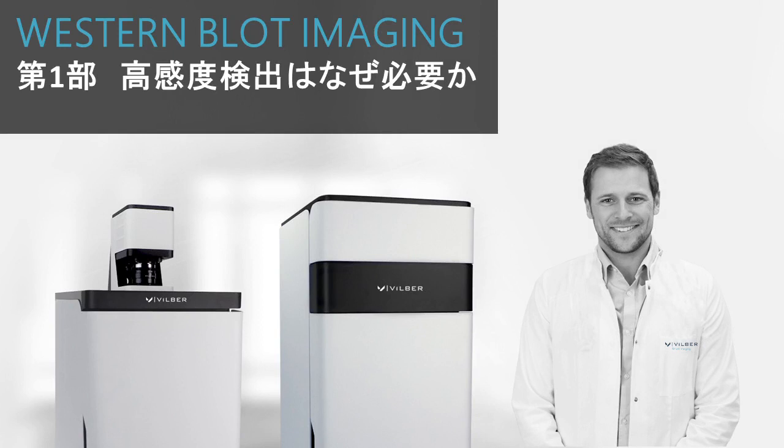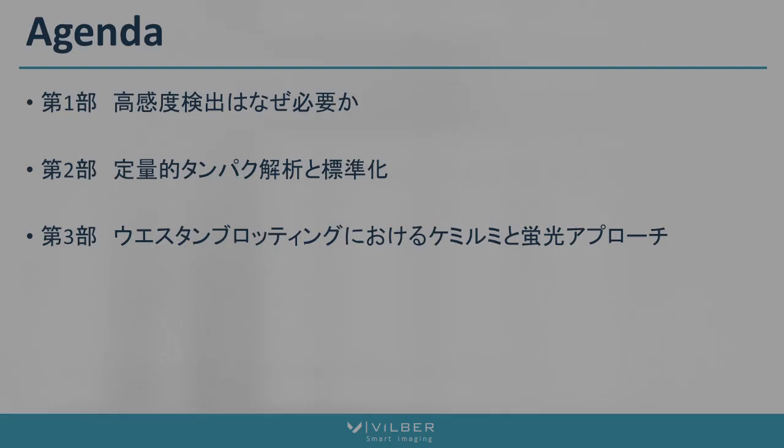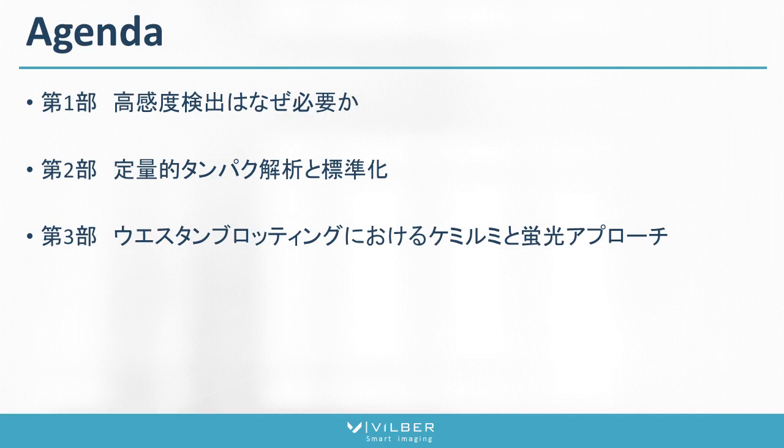Good afternoon and welcome to the Western Blot Imaging Seminar. Today we will have different topics. The first topic we will discuss is about sensitivity — how sensitivity is important for Western Blot imaging. Sensitivity is a key feature required for chemiluminescence, and we will explain why you need it, what makes sensitivity, and how to validate good sensitivity.